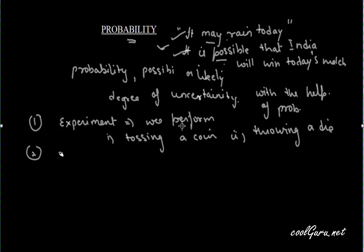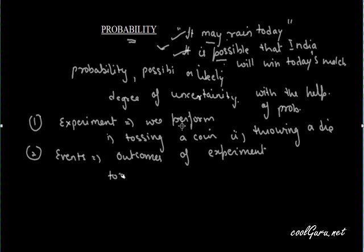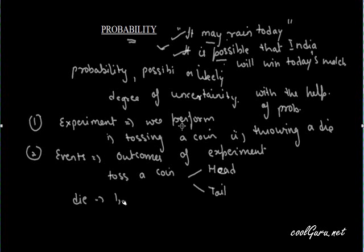The second term is events. Events are the outcomes of an experiment. For example, when we toss a coin, either head or tail can happen — so head and tail are events. Similarly, when throwing a die, we may get one, two, three, four, five, or six — these all are events.